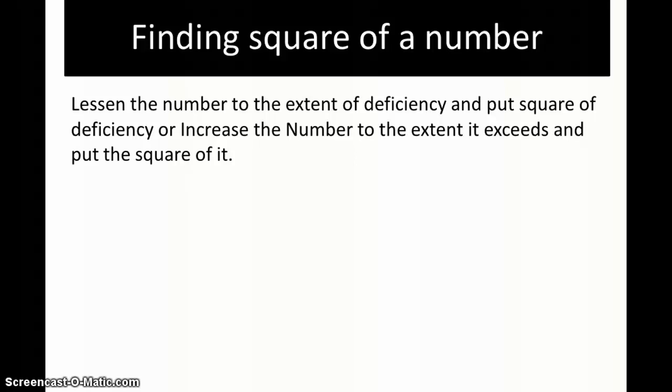Now we are going to see the technique to find the square of a number which is near to some numbers like thousand, hundred, or ten thousand. The rule says: lessen the number to the extent of deficiency and put the square of the deficiency, or increase the number to the extent it exceeds and put the square of it.